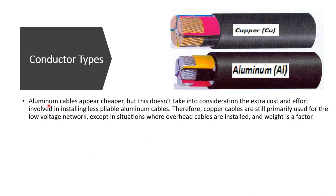Although aluminum cables appear cheaper in price, there is extra cost and effort in installing them because they are less pliable — meaning less flexible — compared to copper. This inflexibility is one of the disadvantages of using aluminum cables.